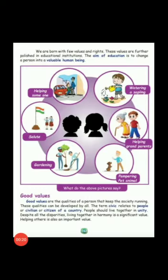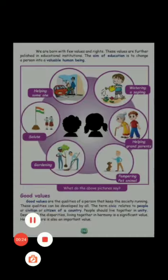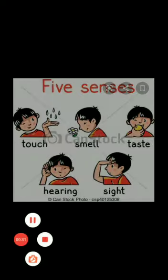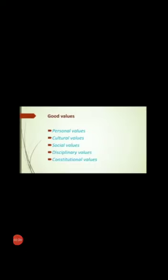In this lesson, we saw the features of a good citizen. The 5 Senses are: Touch, Smell, Taste, Hearing, and Sight. Good Values include Personal Values, Cultural Values, Social Values, Disciplinary Values, and Constitutional Values.